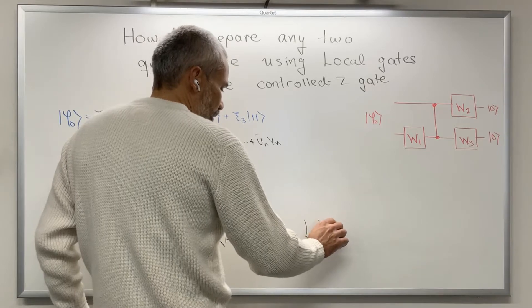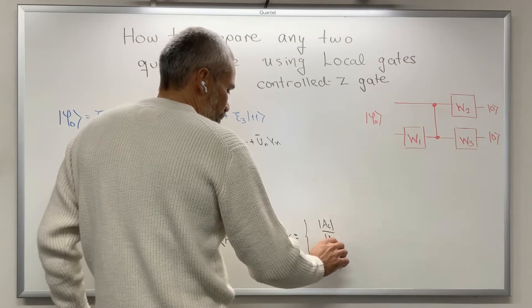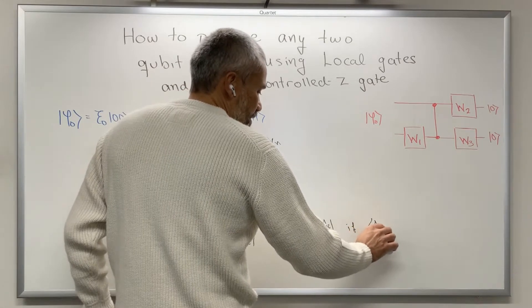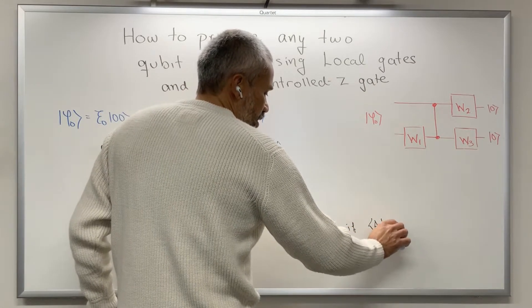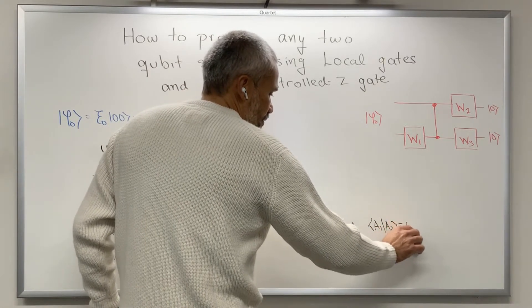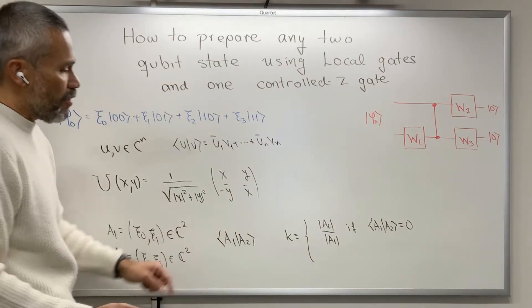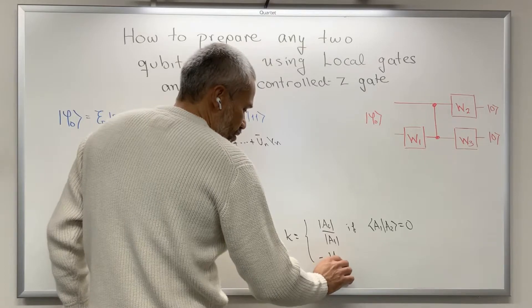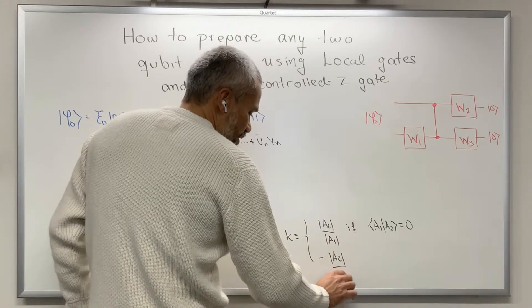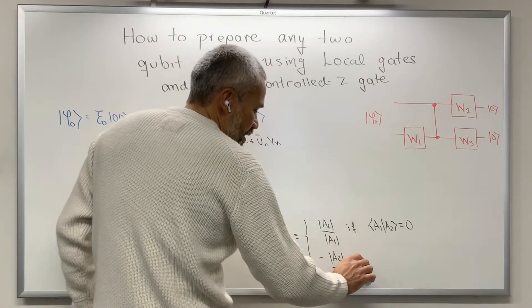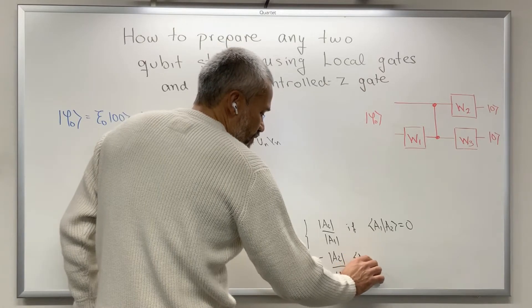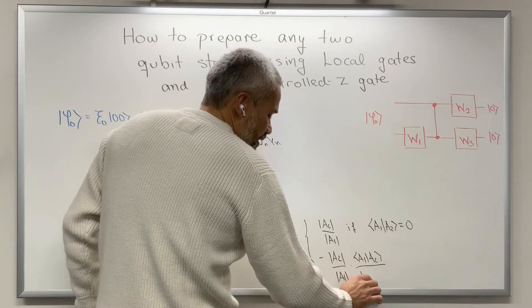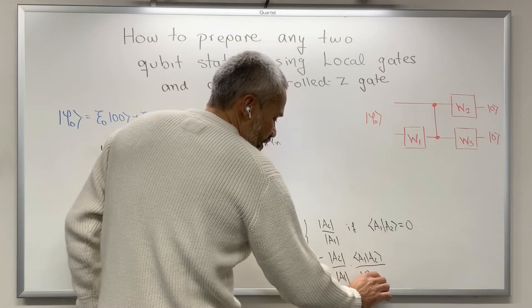We compute a complex number k. This number equals either the norm of a2 over the norm of a1, in the case that the inner product is equal to 0; or it equals negative (‖a2‖/‖a1‖) times the dot product of a1 with a2, divided by the norm of that complex number.